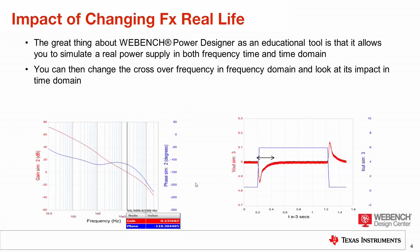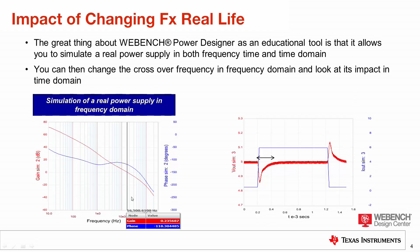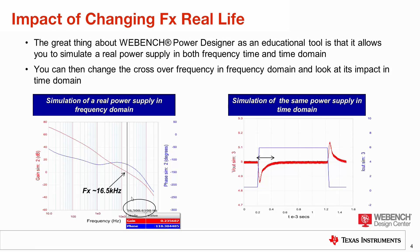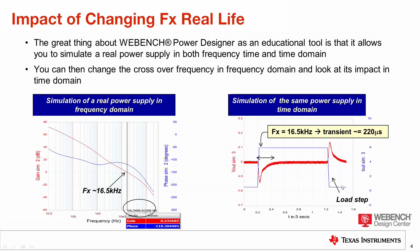What is the impact of changing the crossover frequency in real life? The great thing about Webbench Power Designer as an educational tool is that it allows you to simulate a real power supply in both the frequency domain and the time domain. Here I have simulated it in the frequency domain and in the time domain, and a crossover frequency of around 16 kHz — with a load step going from just above zero to around 6 amps — gives a transient response of about 220 microseconds. That means after this load step, the power supply recovers in around 220 microseconds.